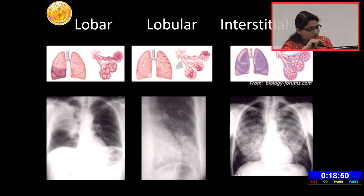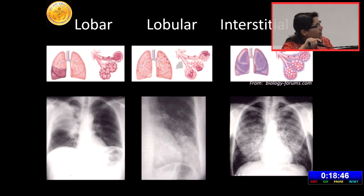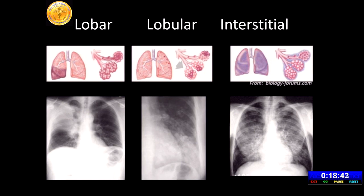This is a case of lobar consolidation of the right upper lobe. In lobular bronchopneumonia, infection starts in the airway, then spreads to alveoli slowly. So it will be multifocal and patchy to start with. On a radiograph you will see multiple small airspace opacities.